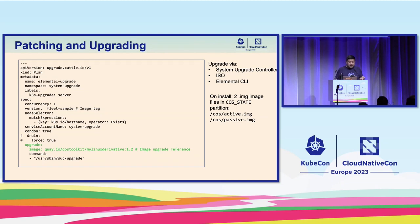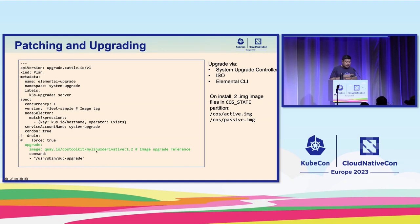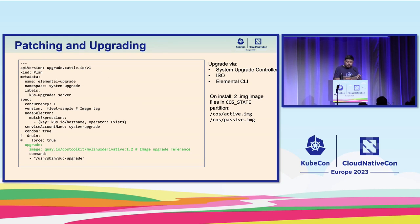The controller selects nodes with a label selector. When the job runs to completion, the controller labels the node indicating its upgrade is done. This is an example Plan — just a few lines specifying the upgrade using the bootable container OS image created previously with the my-linux-derivative:1.2 tag. We can upgrade in a few ways: automatically with the System Upgrade Controller, via ISO, or via the Elemental CLI.